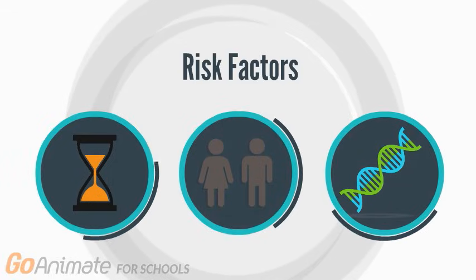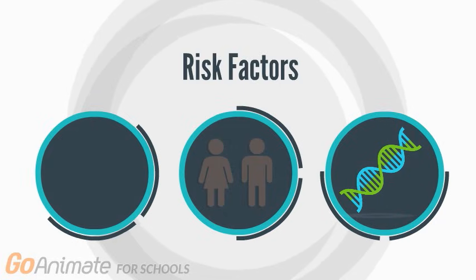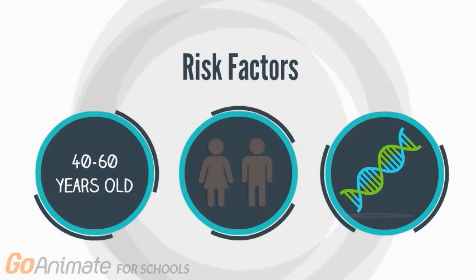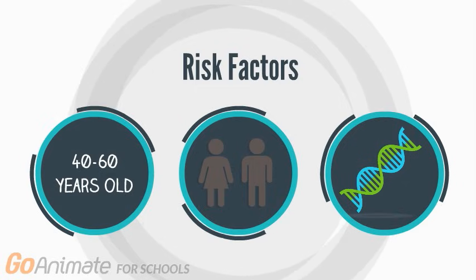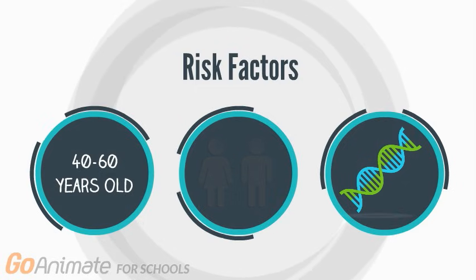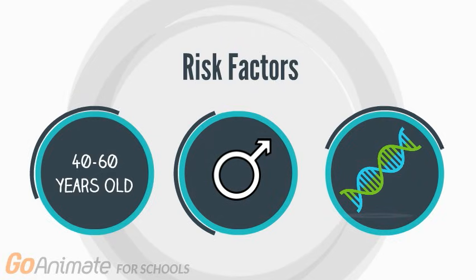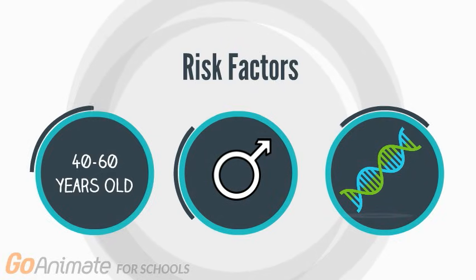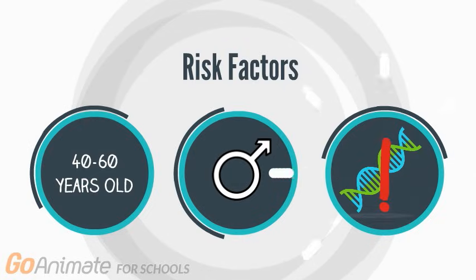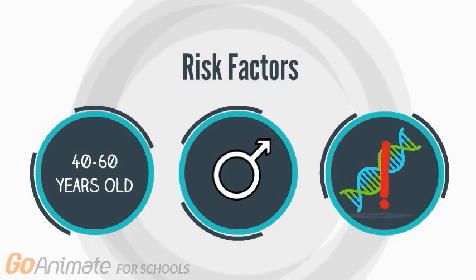The probability of developing ALS increases with age and is most common between 40 and 60 years of age. Sex is a risk factor before the age of 65 and is usually more common in men than women. However, this discrepancy is not as evident over the age of 70.